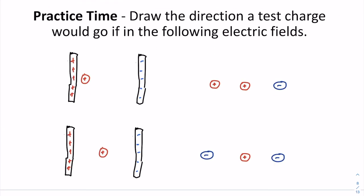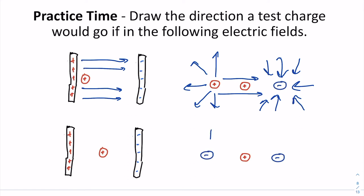Okay, here we're going to draw the direction a test charge would go, if in the following electric fields. Let's draw the electric fields first. All right, this is the direction that a positive test charge would go. Okay, our electric fields look like this. Outwards from positives, inwards towards negatives.